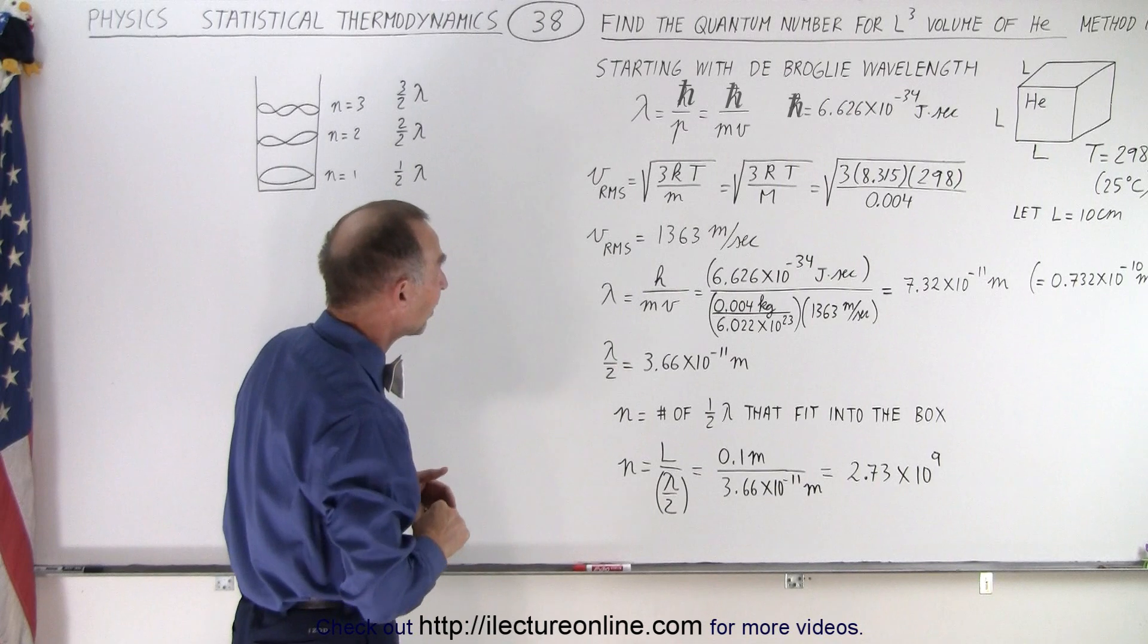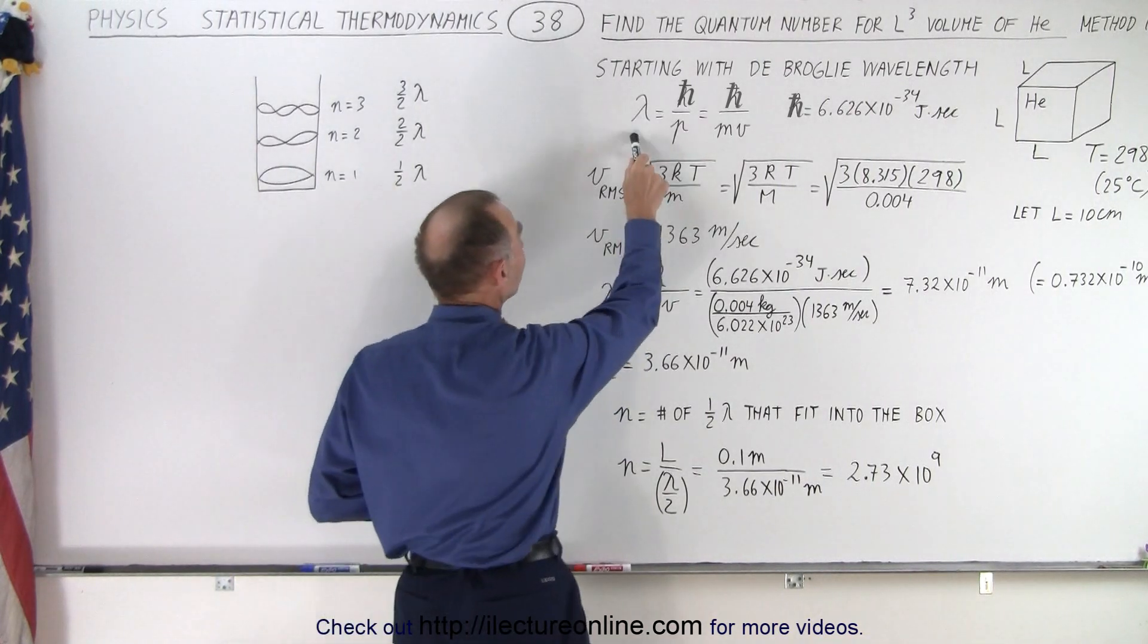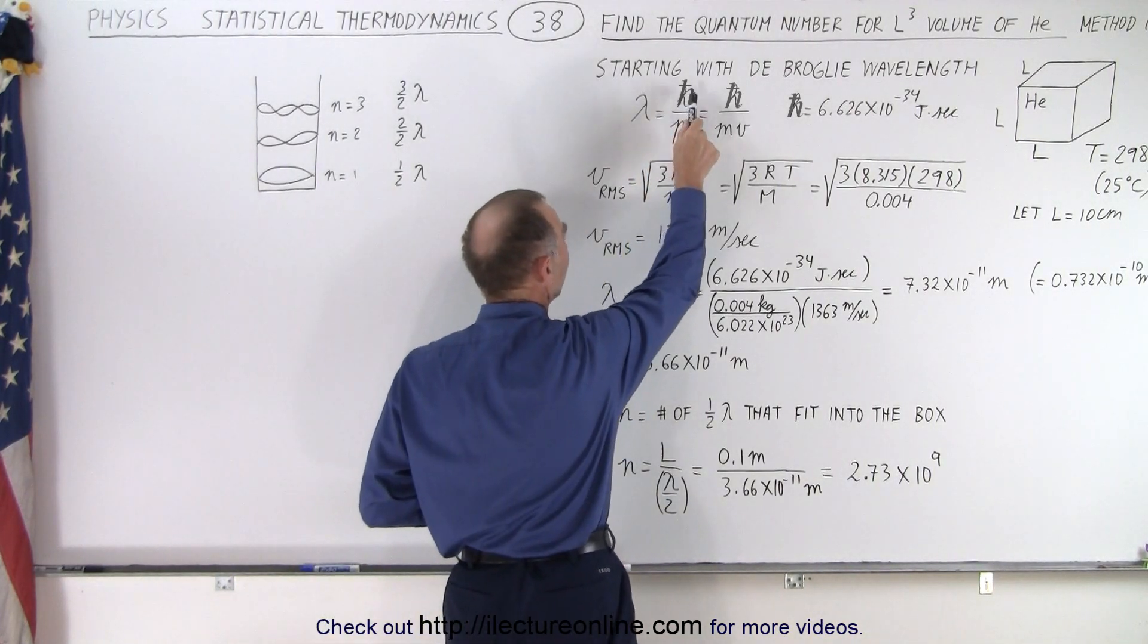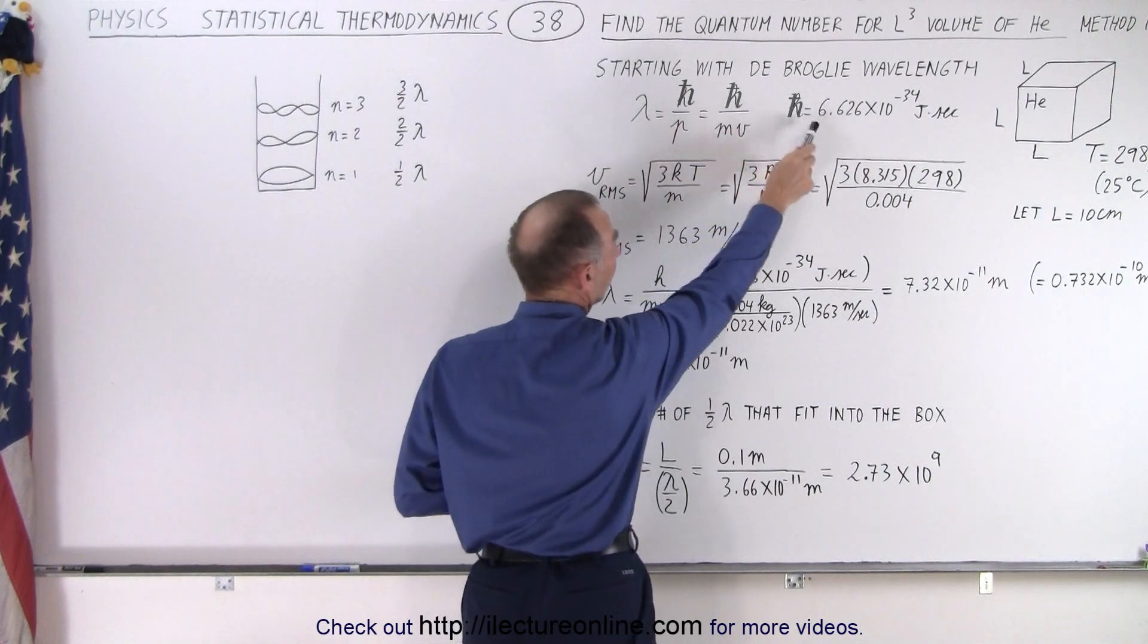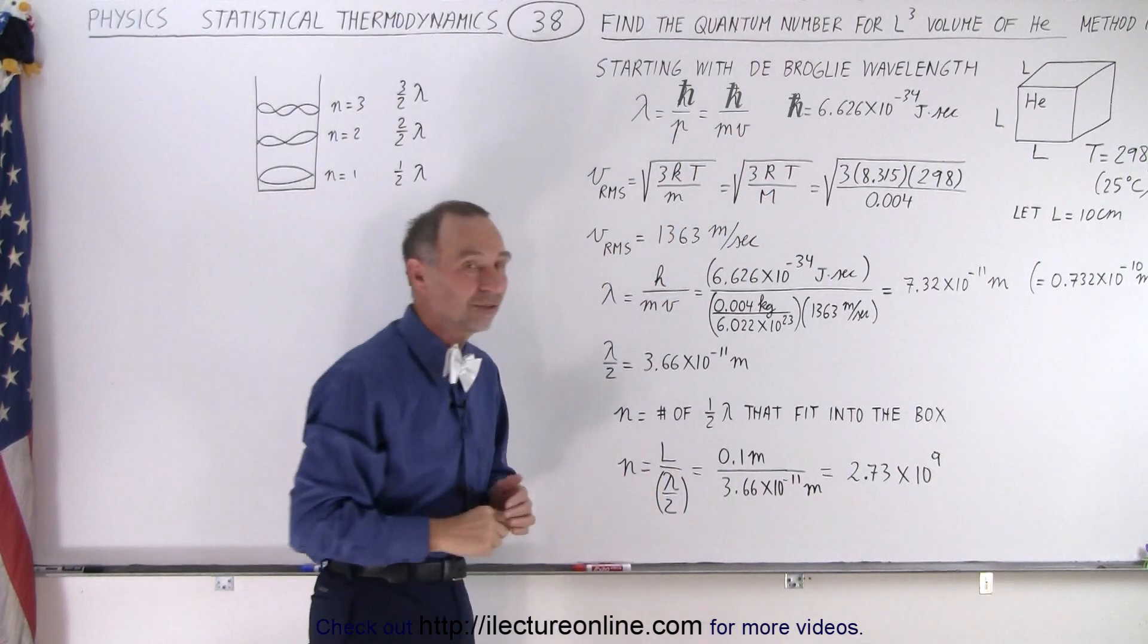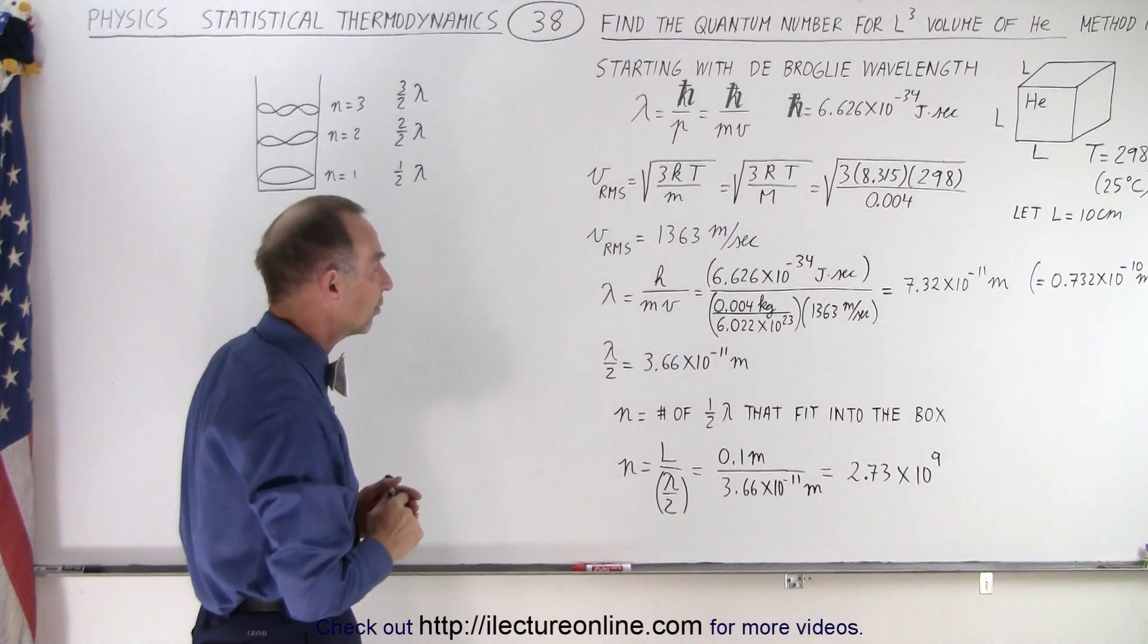First, let's start with the de Broglie wavelength. Note that the de Broglie wavelength is equal to the Planck's constant divided by the momentum, which is mass times velocity. Planck's constant is defined as 6.626 times 10 to the minus 34 joules times seconds.